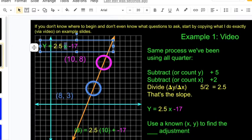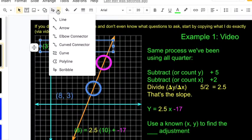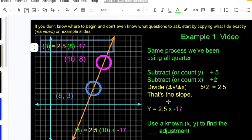Eight three. Two point five times eight minus seventeen should give us three. Does it? Two point five times eight, that's sixteen plus four, that's twenty minus seventeen is three. Yes, it works. So we know that this equation works for any point on the entire line.